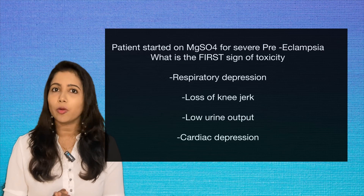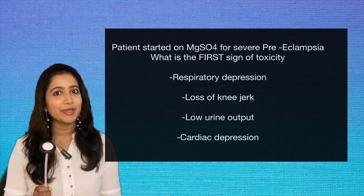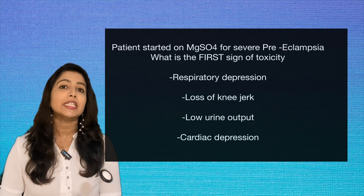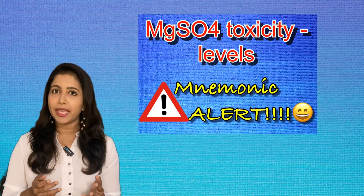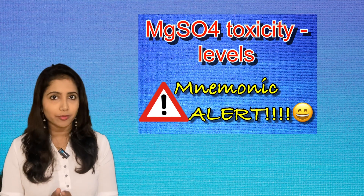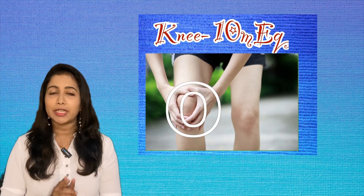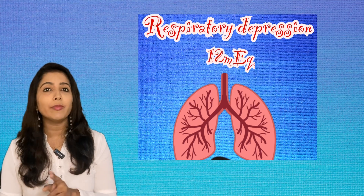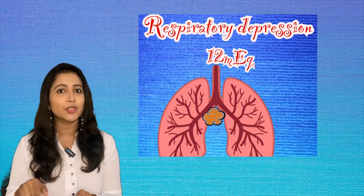It is important to understand at what level toxicities develop. You may remember your internship days carrying a knee hammer — the first thing to go is the knee jerk. Loss of knee jerk is followed by respiratory depression, and the last is cardiac arrest. The knee jerk is absent when the serum magnesium level is more than 10 milliequivalents per liter. When the level is more than 12 milliequivalents per liter, it leads to respiratory depression or paralysis — the two letters in '12' can help you remember.